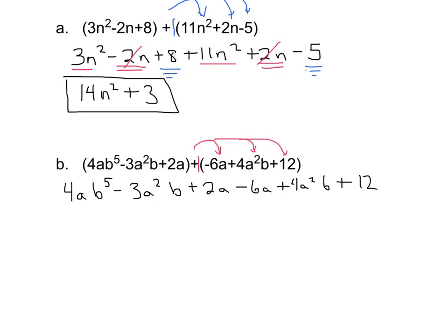Now again start with the highest power stuff. I take a look right here and I have a 4ab to the fifth. There's nothing really I can combine that with, so I'm just going to copy that down, 4ab to the fifth.